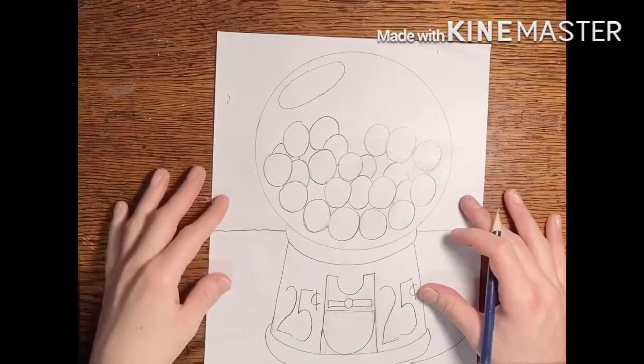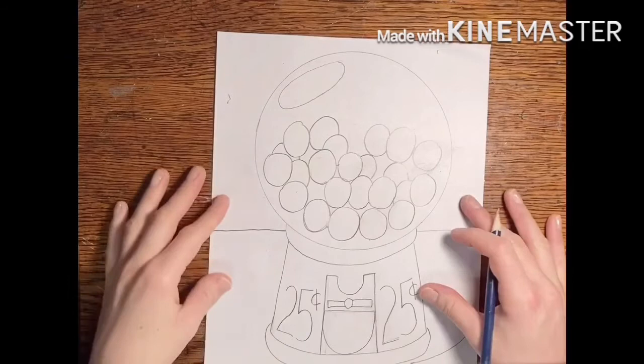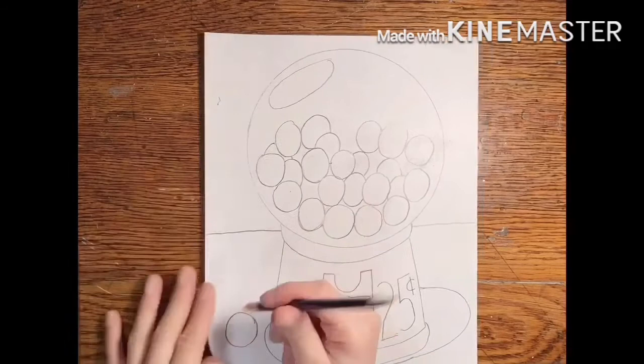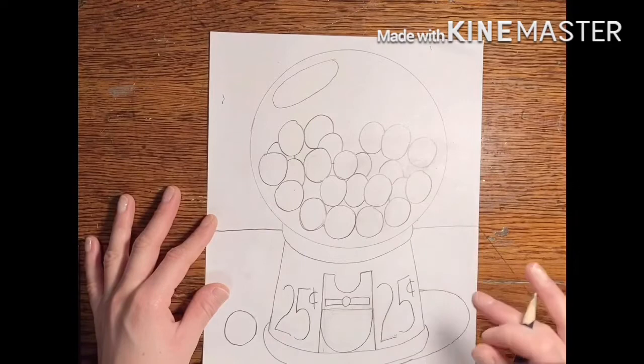Alright, I think I have enough gumballs here to make it look a little more interesting. I'm going to draw another gumball that's going to be hanging out on the outside of my gumball machine. Now because I have a cast shadow behind my gumball machine, I'm going to have a little cast shadow underneath that gumball.